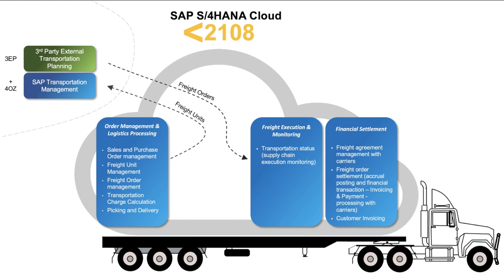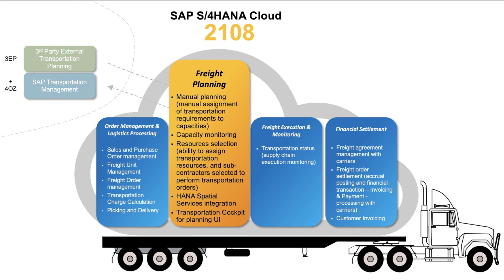What has changed with the release of 2108 is that this whole freight planning capability is now in the system, so your reliance on an external system is no longer there. With 2108, we now have end-to-end capabilities for transportation management: you can record order-based transportation requirements from sales orders or purchase orders, manage freight units with freight unit building rules, manage freight orders, perform transportation charge calculation, and carry out the picking, packing and delivery process.